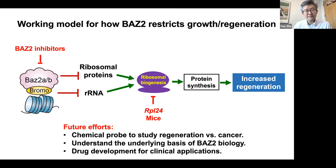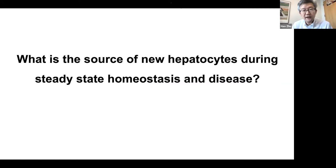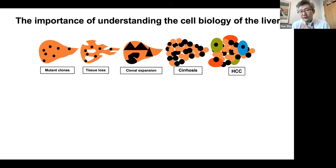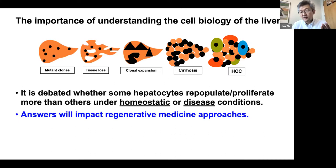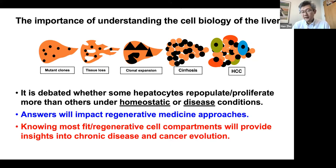In the last part of my talk, I'll discuss some published and unpublished work addressing a slightly controversial question: whether there's a defined source of new hepatocytes during steady-state homeostasis and liver injury. This is an important question — it would be nice to reach agreement on whether some hepatocytes repopulate or proliferate more than others under different conditions. This could impact how we make hepatocytes, what we transplant, the genes regulating proliferation, and our understanding of chronic disease and cancer evolution.